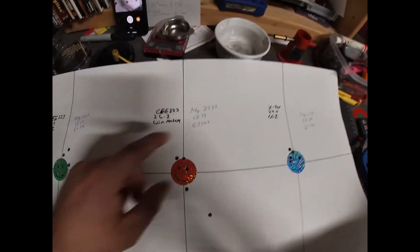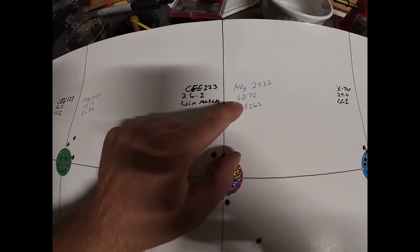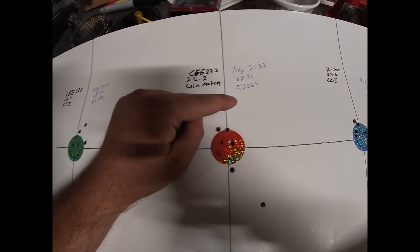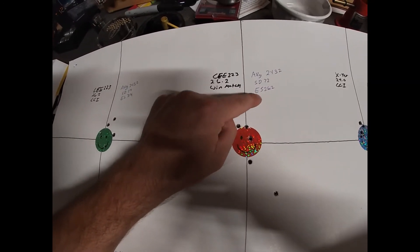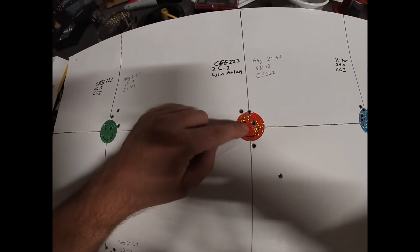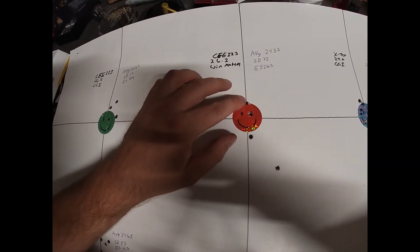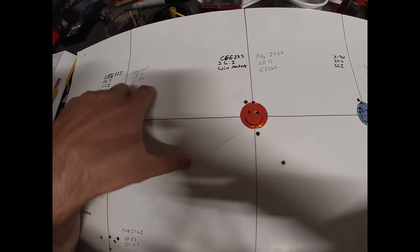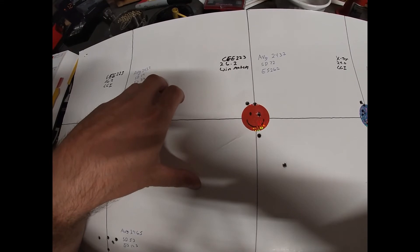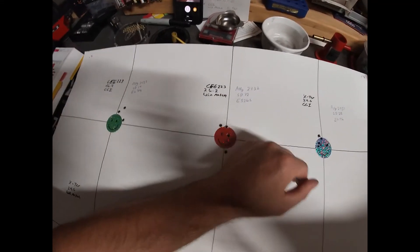But for this one we got an average, kind of weird, same thing, average of 2432, same as this over here. But we got an average of 2432, standard deviation of 72, and then extreme spread of 262. Yuck, that's gross. We don't like that. We don't like this grouping either. So interesting, more expensive primers, Winchester match primers, didn't do as well as CCI.